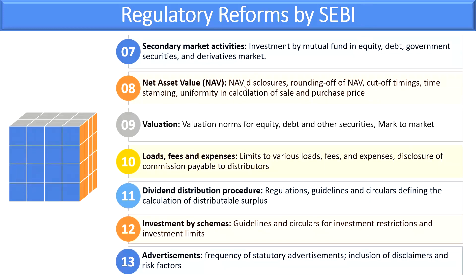For secondary market activities, mutual funds invest in equity, debt instruments, government securities, and derivatives — SEBI has laid down guidelines for all these investments. For Net Asset Value, SEBI has prescribed rules covering NAV disclosure, rounding of NAV, cut-off timings, time stamping, and uniformity in calculation of sale and purchase price. For valuation — the most important part — SEBI has laid down guidelines for equity, debt, and other securities including mark-to-market norms.